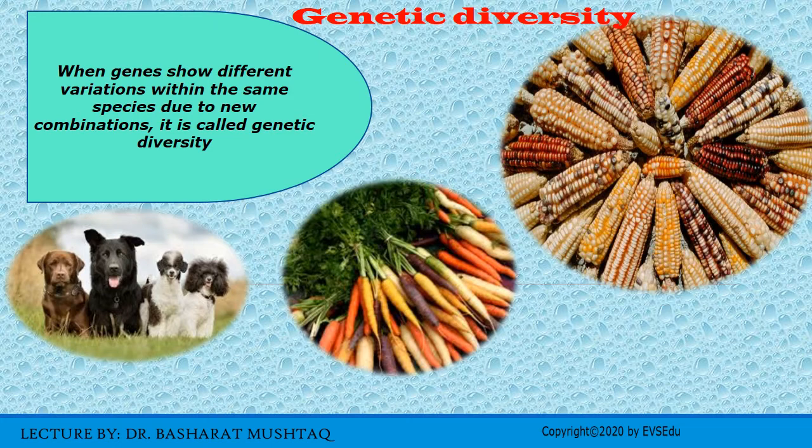Within a species there are found a variety of races which slightly differ from each other in one or more characteristics such as shape, size, quality of product, resistance to pests, insects, and disease, or the ability to withstand adverse environmental conditions. These differences are due to slight variations in their organismal genetic makeup.